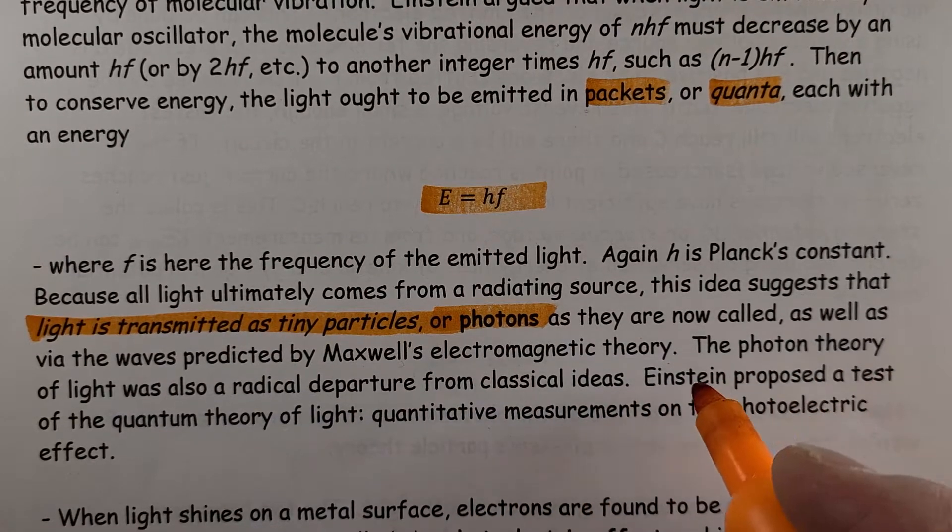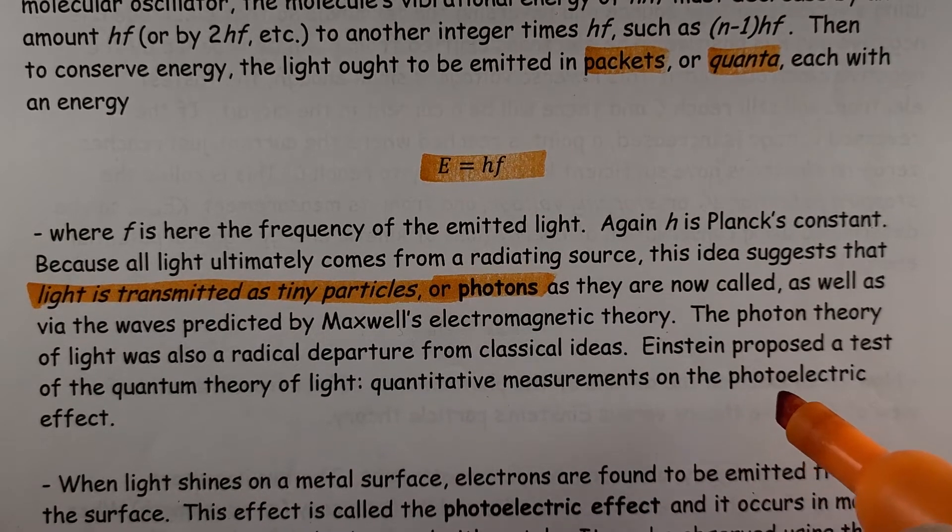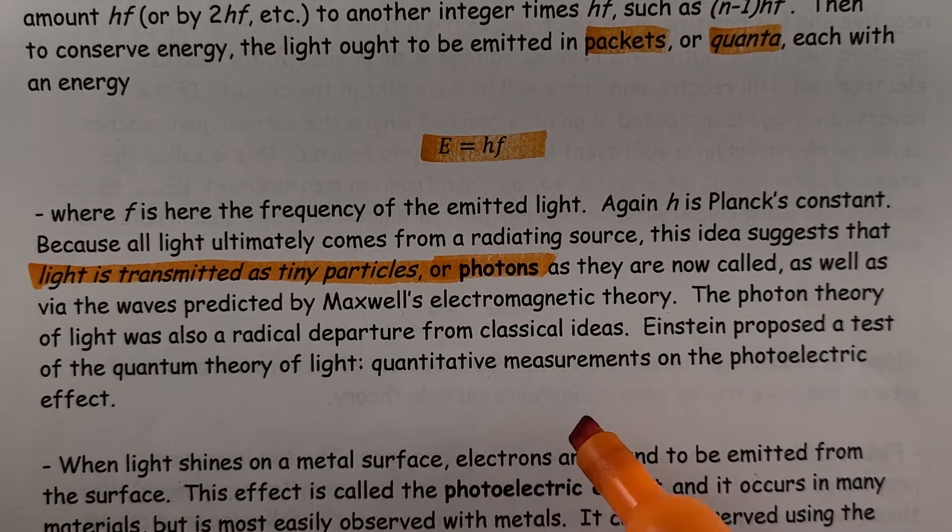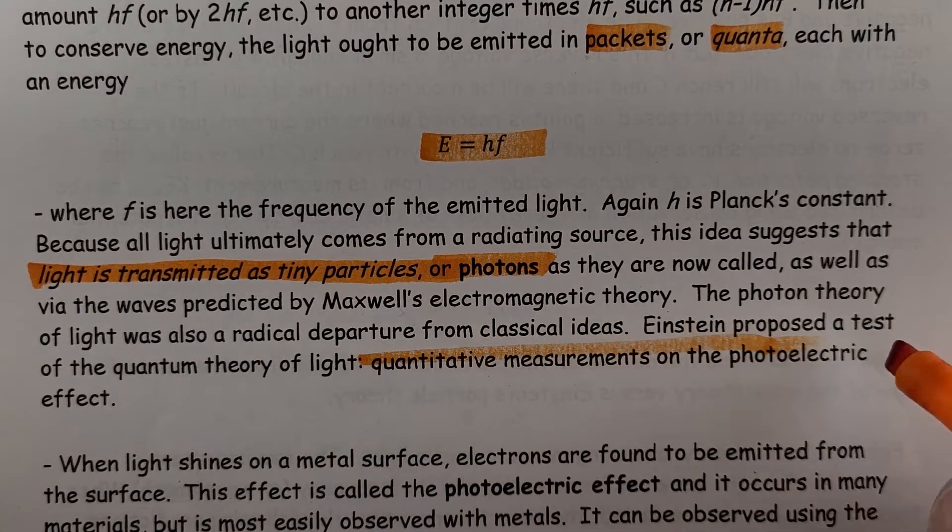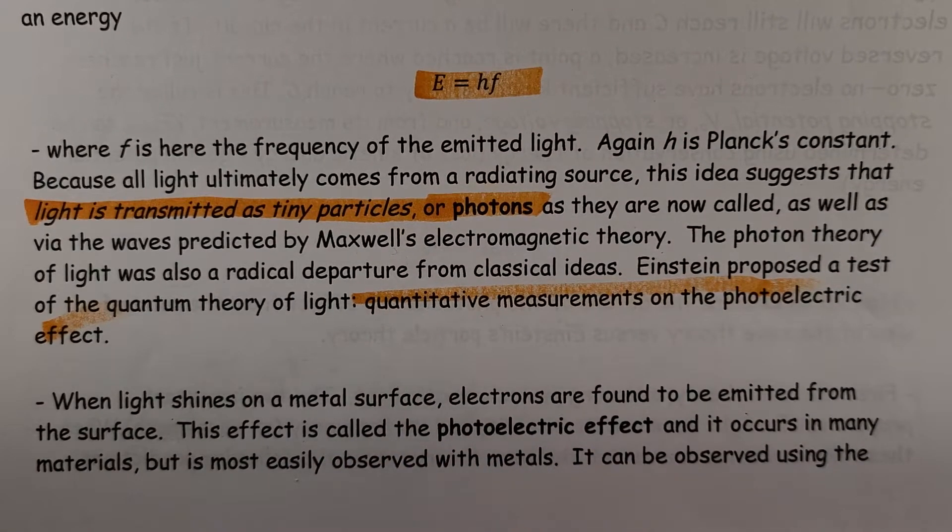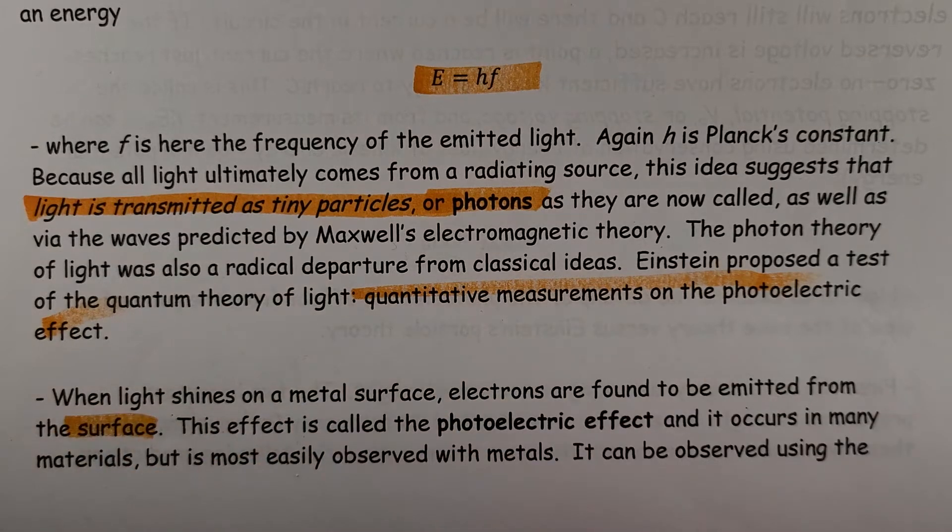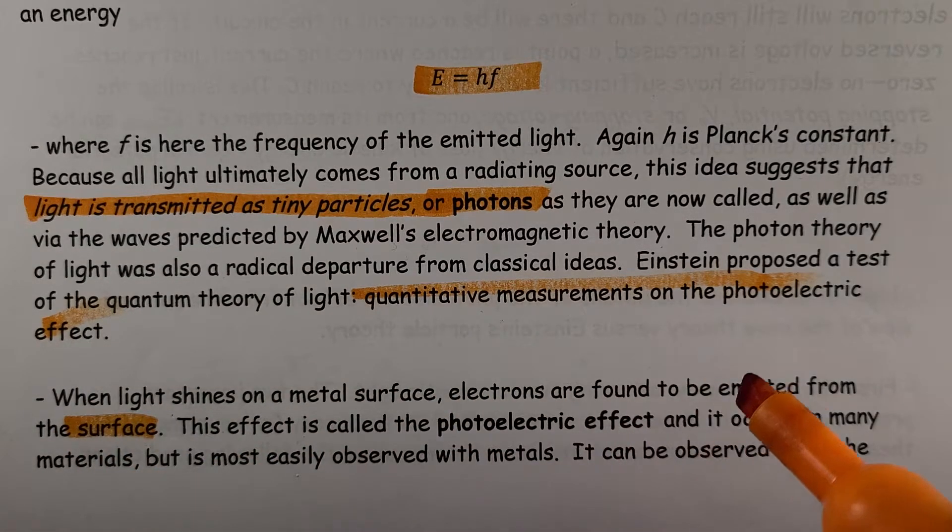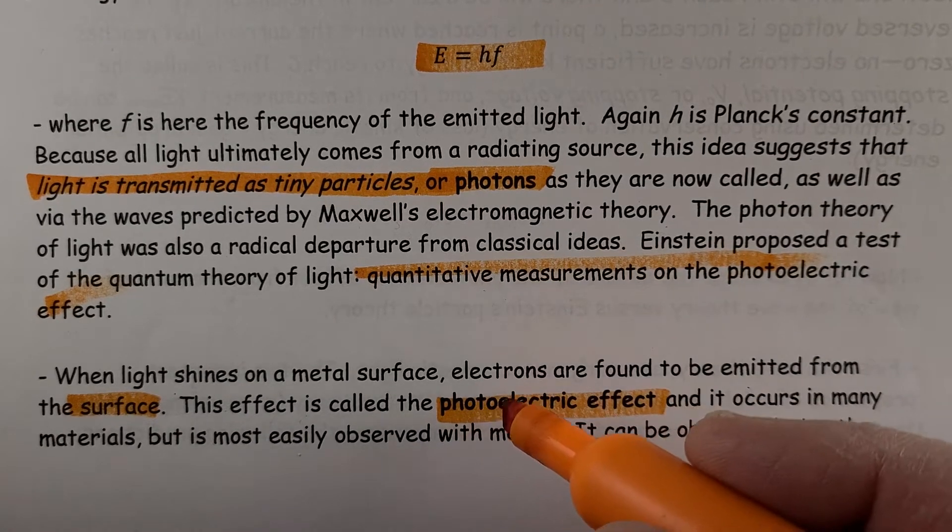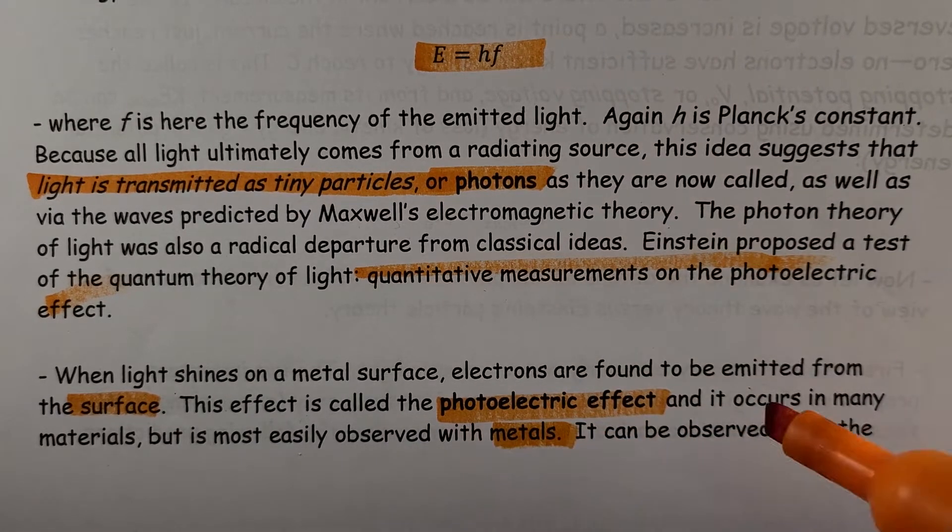The photon theory of light was also a radical departure from classical physics. Einstein proposed a test of the quantum theory of light, quantitative measurements of the photoelectric effect. When light shines on a metal surface, as you saw in that simulation, electrons are found to be emitted from a surface. The effect is called the photoelectric effect, and it occurs in many materials, and is easily observed with metals.